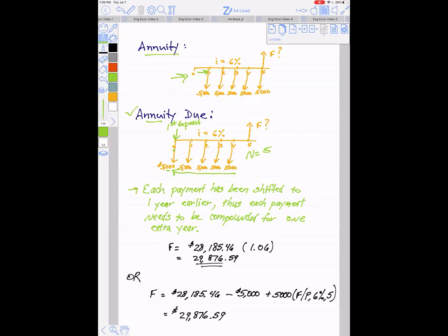Therefore, each payment needs to be compounded for one extra year. So if we've already solved the problem with a regular annuity with payments happening at the end of the year, we found the future balance was $28,185. If we already have that, we can just compound the entire amount by one extra year by multiplying it by 1 plus the interest rate to come up with the new ending balance of $29,876.59. It makes sense that this is a little bit higher than the regular annuity value because every payment has been in the account and being compounded at 6% interest for one additional year.